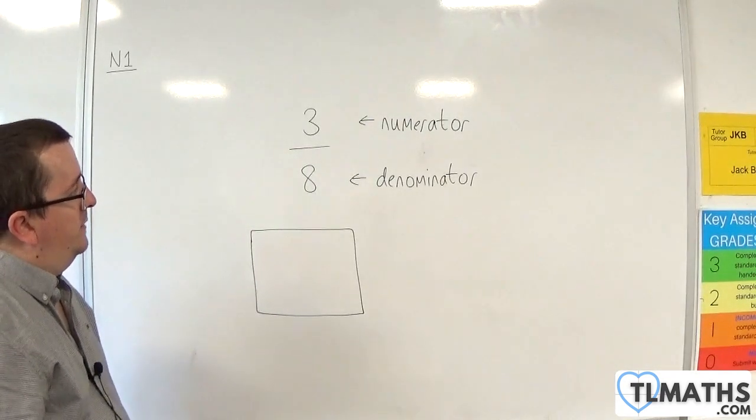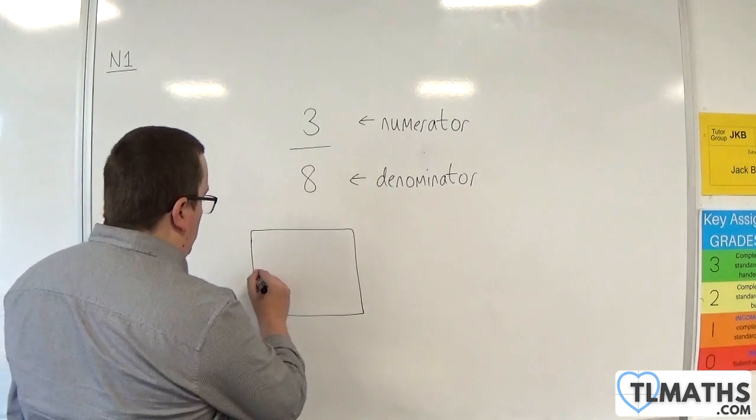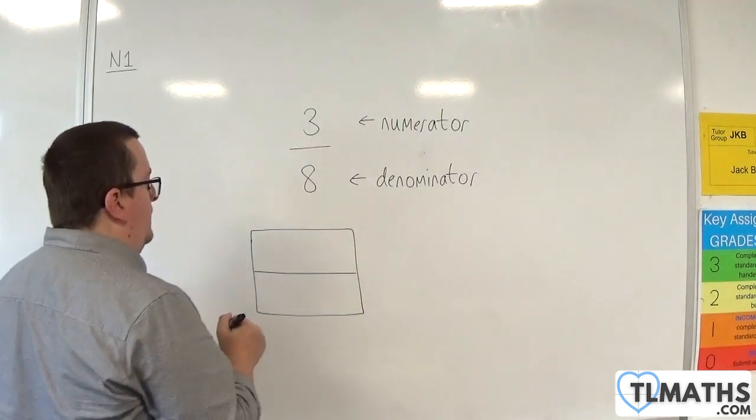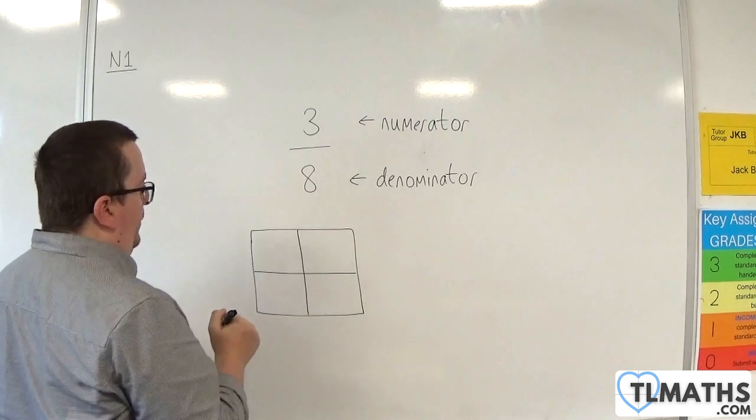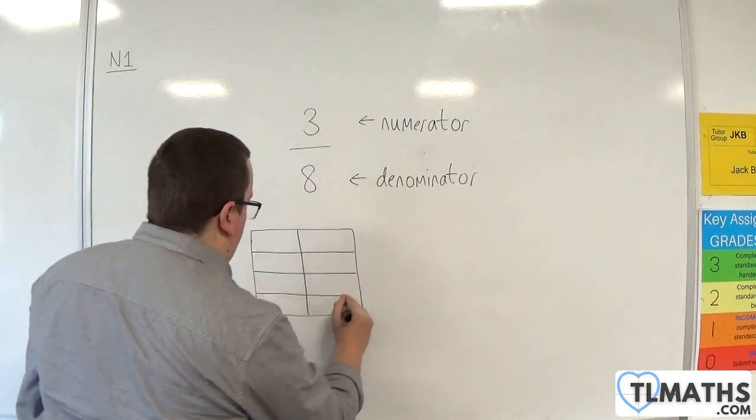then I can divide it into 8 pieces. So, here I've divided it in half. Now I've divided it into quarters. And if I divide those into 2 and those into 2, okay?